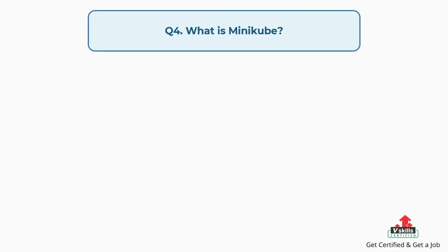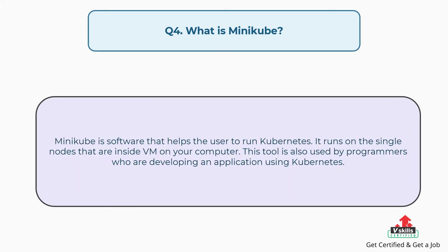Question number four: What is Minikube? Minikube is software that helps the user to run Kubernetes. It runs on single nodes that are inside a VM on your computer. This tool is also used by programmers who are developing an application using Kubernetes.